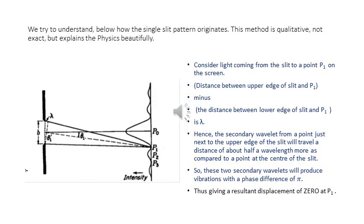This is a favorite part of the description of the grating. We will try to understand how the single slit pattern originates. The method is qualitative, not exact, but explains the physics beautifully — and perhaps this is the reason why Jenkins and White is so highly regarded. Look at the diagram taken from Jenkins and White.